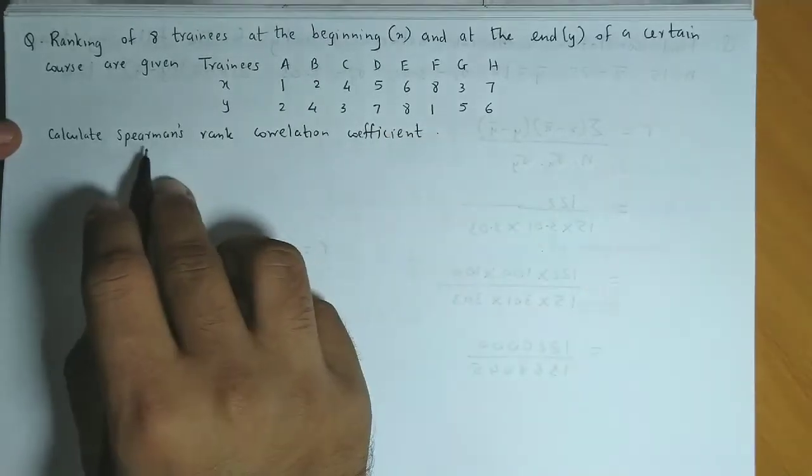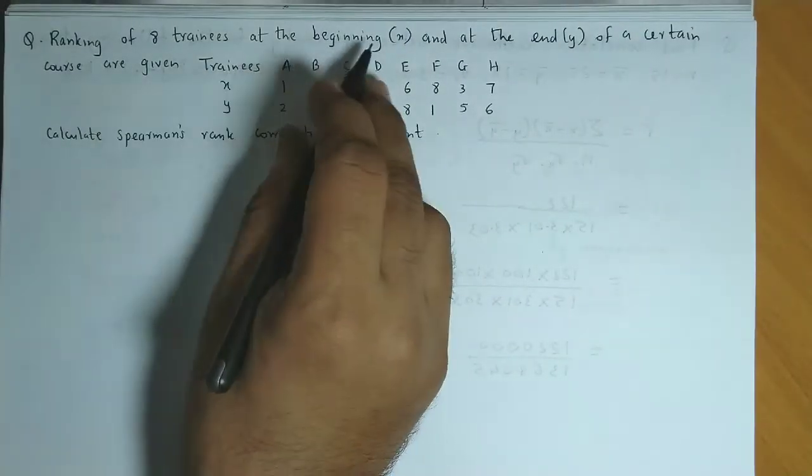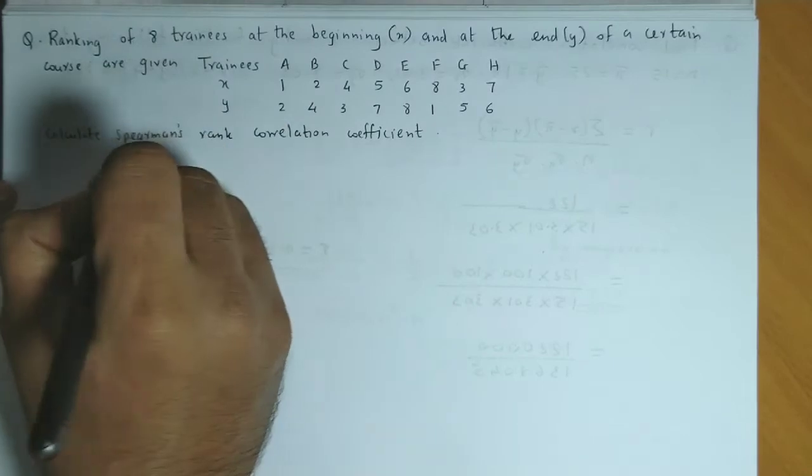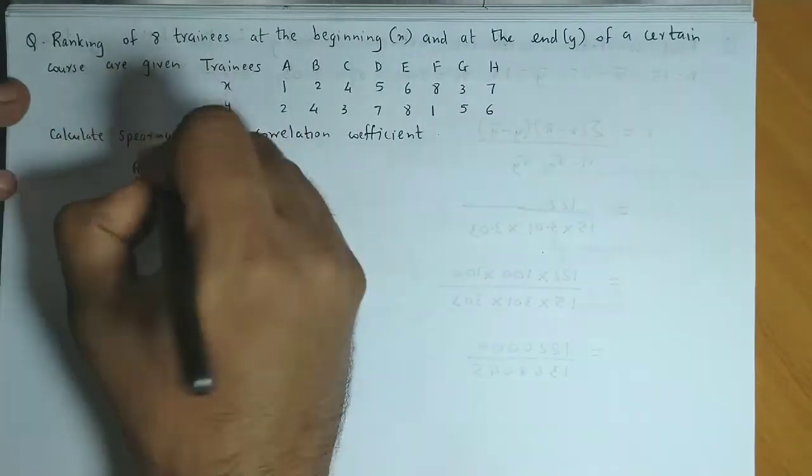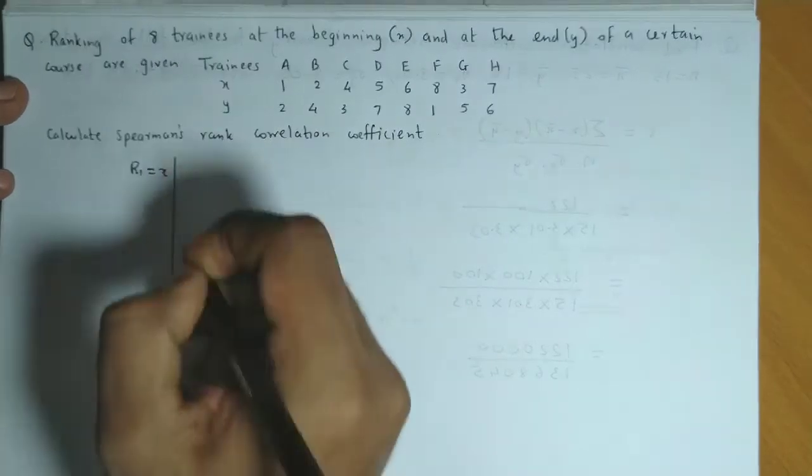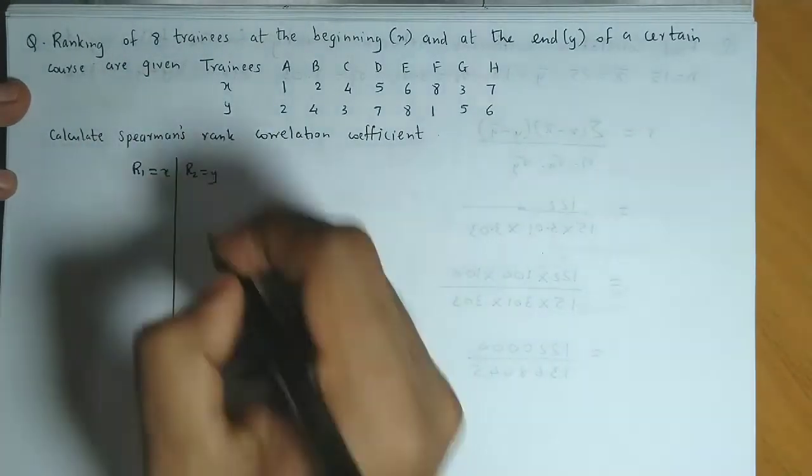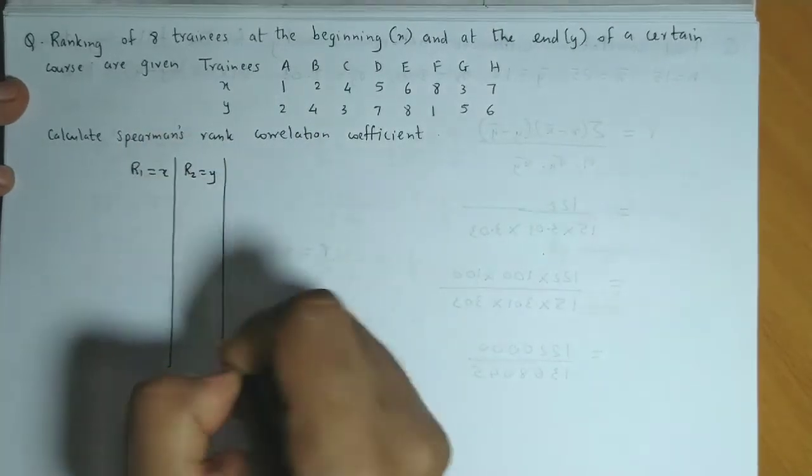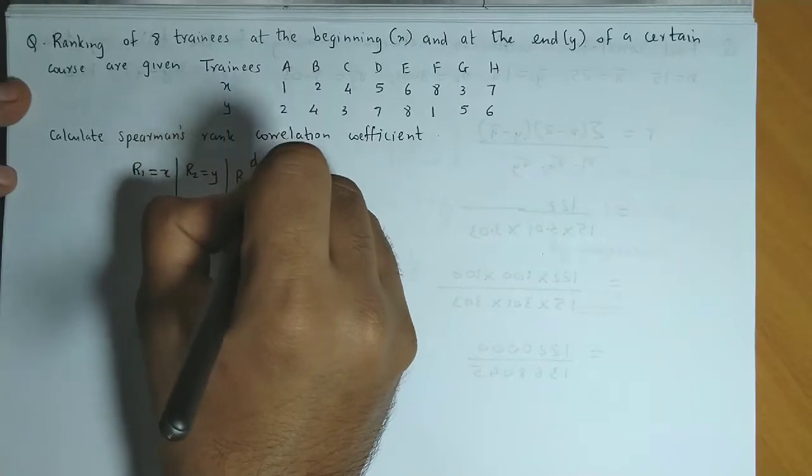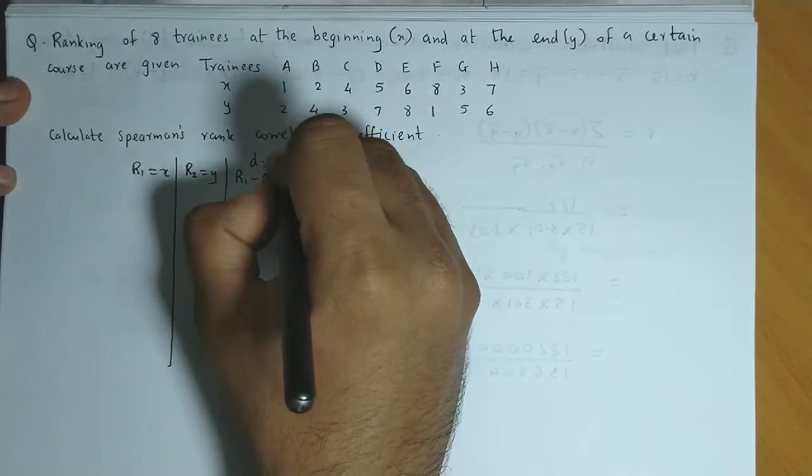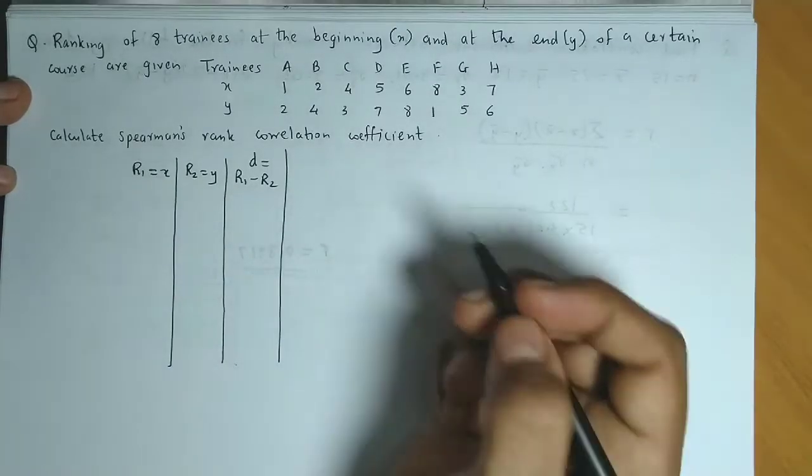Now we need to calculate the Spearman's rank correlation coefficient. So suppose the ranks at the beginning, that is X, we denote as R1, and R2 represents Y. Then next is the difference between the ranks.